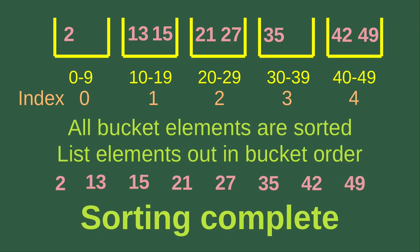Finally, we list out all elements stored in each bucket, from index 0 to index 4, following the order within each bucket. We can now list all numbers in ascending order: 2, 13, 15, 21, 27, 35, 42, and 49. The sorting process is now complete.